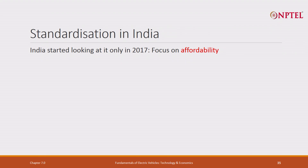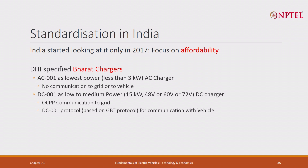Standardization in India: India started looking at this only in 2017, focusing on affordability, because in India affordability is a very big issue. They specified two chargers. One is called Bharat charger AC 001 — a less than 3 kilowatt AC charger with no communication to the grid or to the vehicle. It is a kind of Level 1 charger. This charger is 15 ampere, 230 volt — same as what is used by air conditioners and washing machines at home — but using an industrial plug so repeated plugging and unplugging will not hurt. It is a very simple charger providing up to 3 kilowatts.